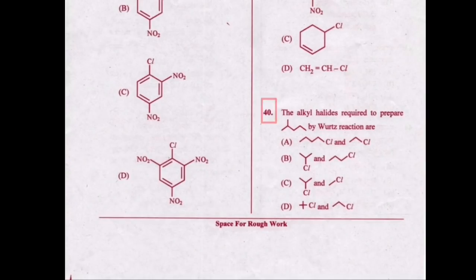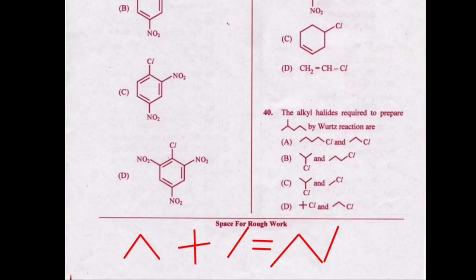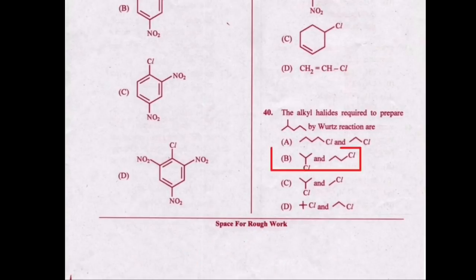In this question, the probability of the correct option being option B and option C — both are having a similar start. To decide the correct answer, we take the help of other options. Option A along with option C supports option B, which means option B is a combination of two different symbols. Therefore our correct answer will be option B.